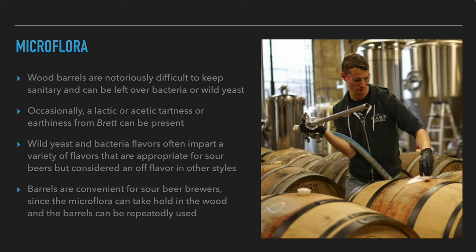Brewers are not limited to spirit barrels. Wine barrels that wineries have stopped using can be a great option for sour beers, since wine balances sweetness and acidity rather than bitterness — fitting the balance of a tart beer — and contributing flavors and aromas of wine and fruits. One of the most problematic things about wood is cleaning it to a sanitary level; therefore bacteria and wild yeast often remain in the wood, known as the barrel microflora. Besides the wood flavors, the microflora contributes lactic or acetic acidity and earthiness. Barrels are therefore very convenient for making sour beers, as the brewer can use them again and again to get similar flavors.